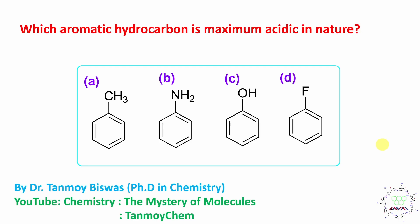Hello everyone, I am Dr. Tanmay Biswas. I welcome you all to my channel. Today's topic of discussion is one MCQ: which aromatic hydrocarbon is maximum acidic in nature? You can see four hydrocarbons - toluene, aniline, phenol, and fluorobenzene.